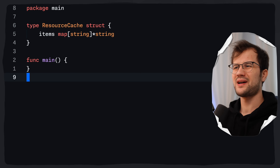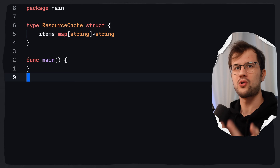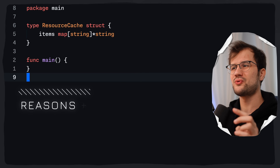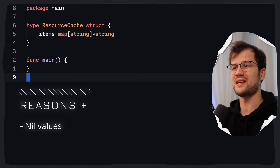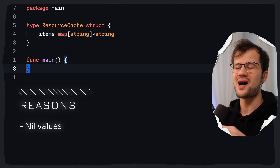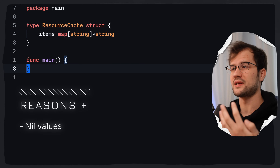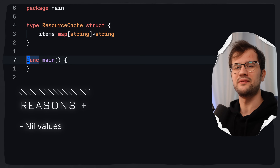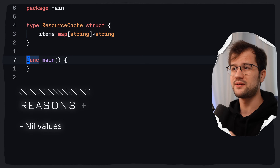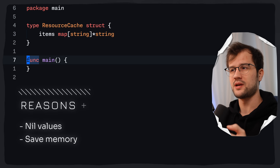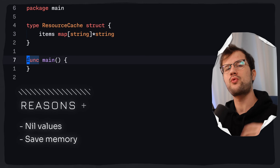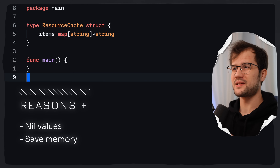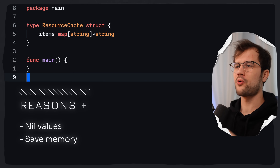You might wonder why we are using a pointer to a string and not a raw string. There are mainly two reasons. The first reason is that we want to nullify or invalidate the key-value pair — we can set nil as the value for that pointer string, whereas a raw string cannot use nil. The other reason is actually to save some memory, because a pointer to a string points directly to the memory instead of copying it into the cache. We are really optimizing for memory flexibility but also potential concurrency patterns.